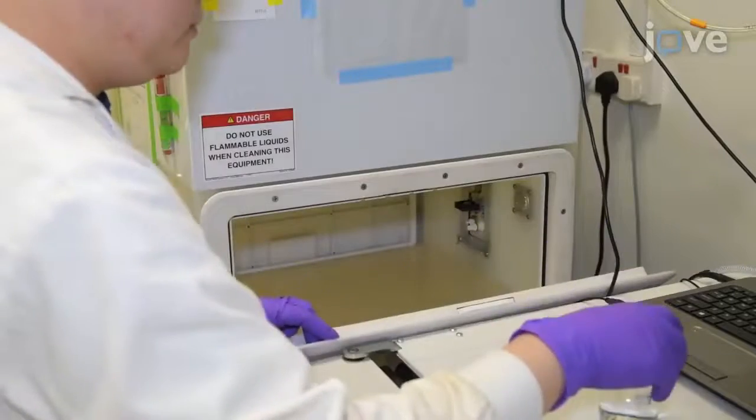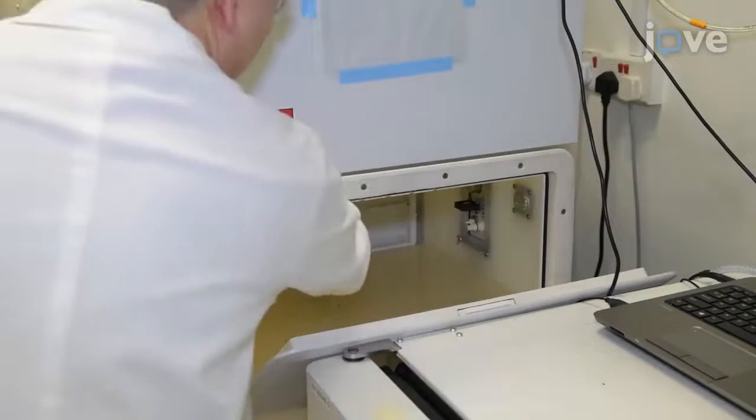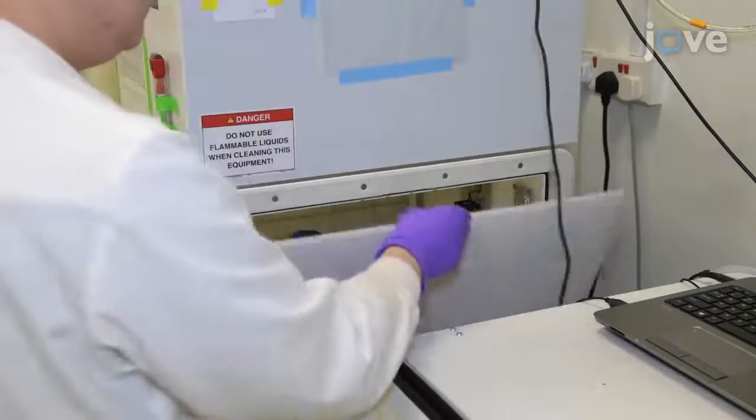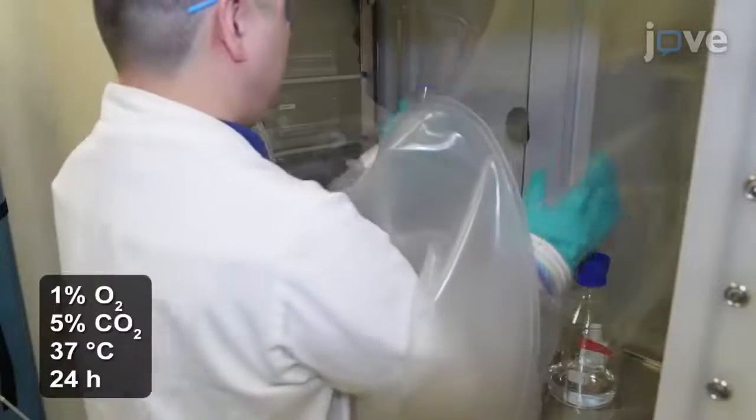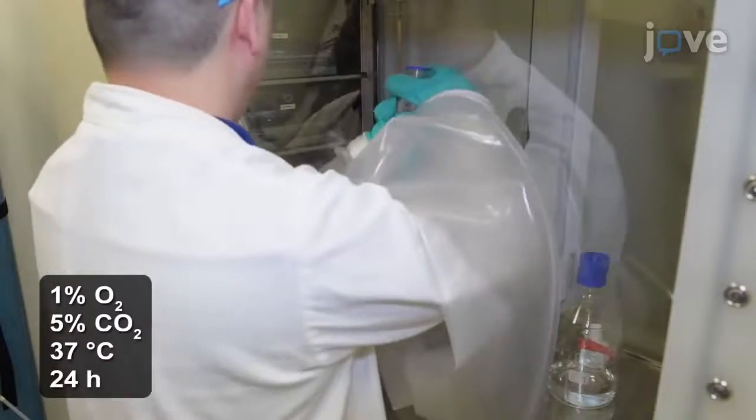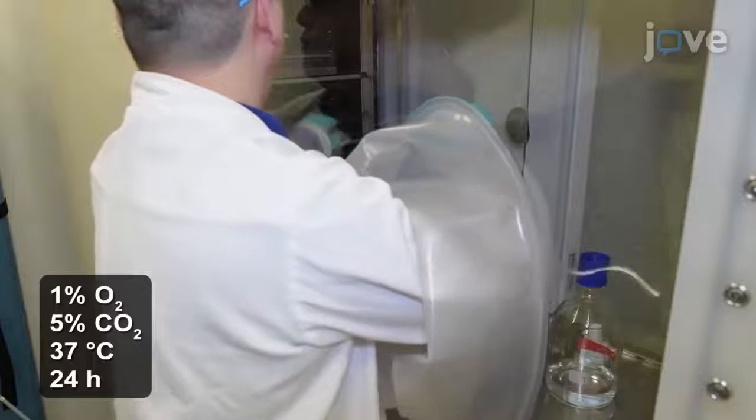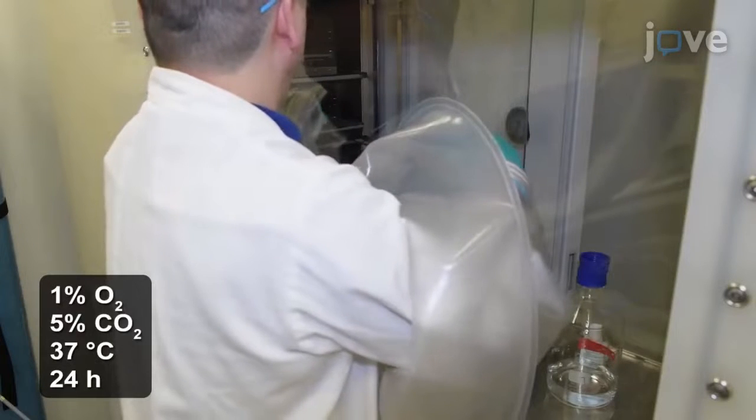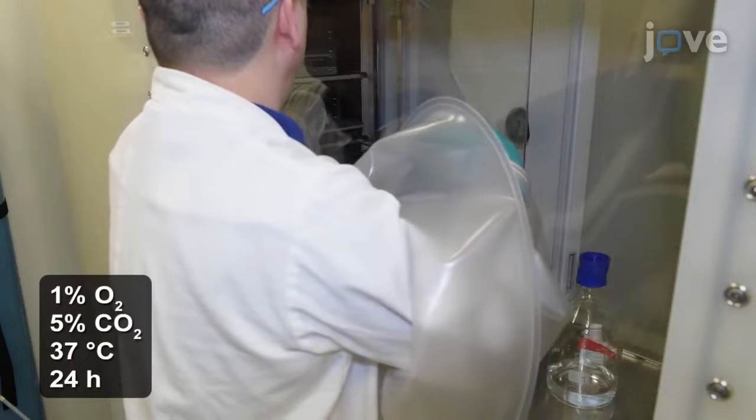On the day before harvesting the hypoxia-treated cells, pre-equilibrate DPBS to hypoxic conditions by placing an uncovered 100-milliliter glass reagent bottle filled with DPBS in the hypoxia subchamber for 24 hours.